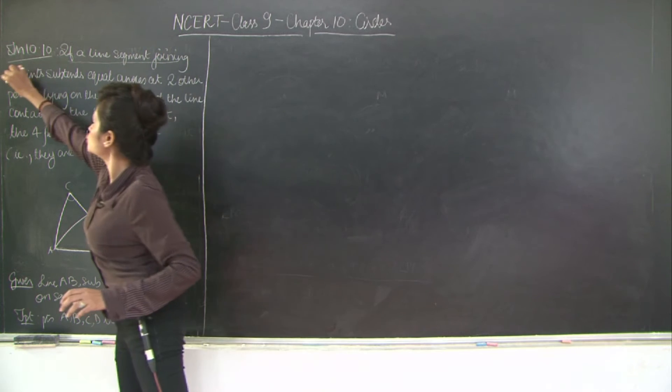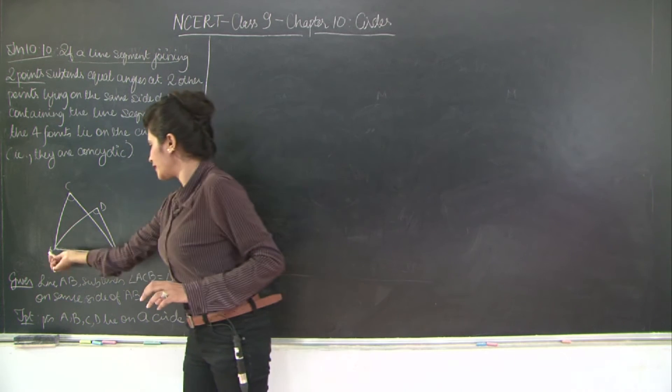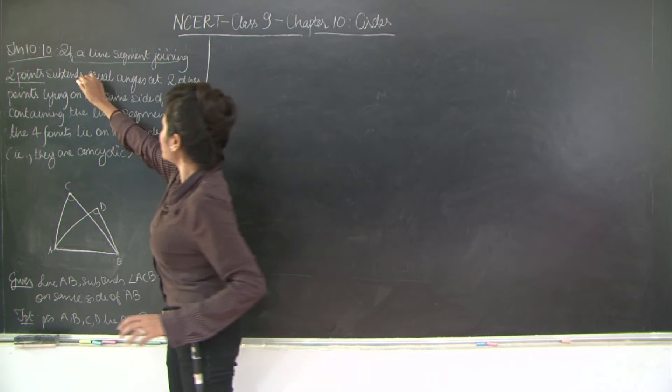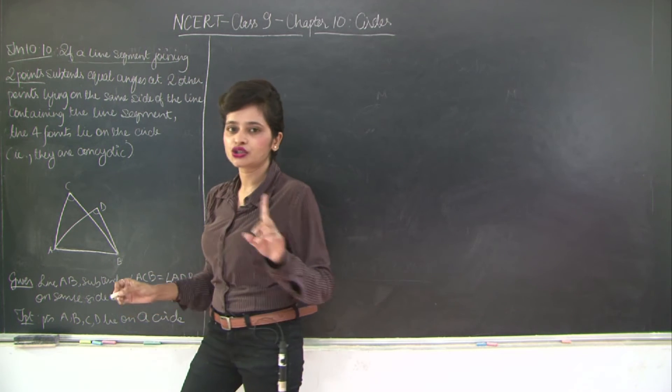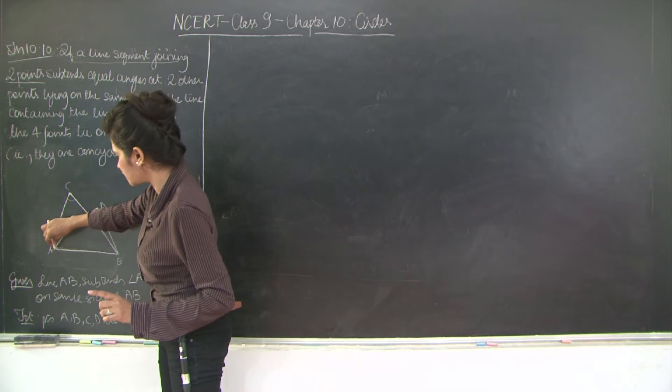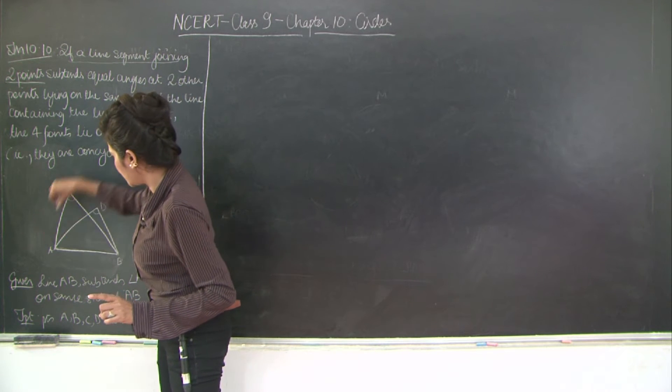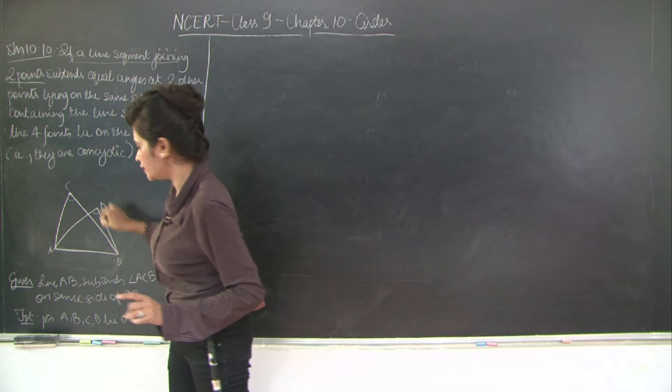If a line segment joining two points, this means segment A, B. Subtends two equal angles at two other points. Subtends two equal angles. So the two equal angles are A, C, B and A, D, B.